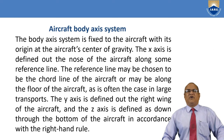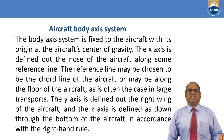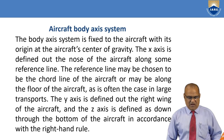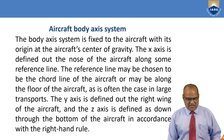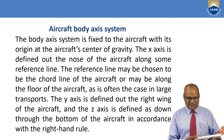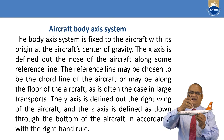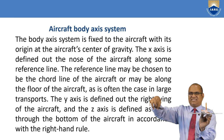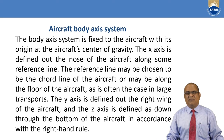The aircraft body axis system is fixed to the aircraft with its origin at the aircraft center of gravity. The x-axis is defined out of the nose of the aircraft along a reference line, which may be the chord line or the floor of the aircraft. The y-axis is defined out of the right wing, and the z-axis is defined through the bottom of the aircraft toward the earth. This is called the aircraft body axis system.